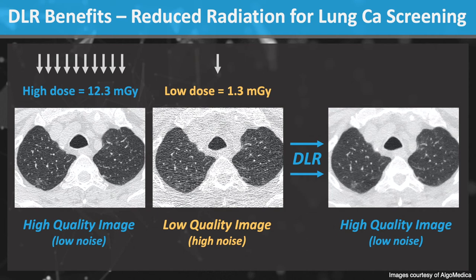Do you see any abnormality in the image? I can see this ground glass opacity on the high quality image from DLR but can't see it on the low quality image. This is Waldo. We don't want to miss Waldo and don't have to with DLR.